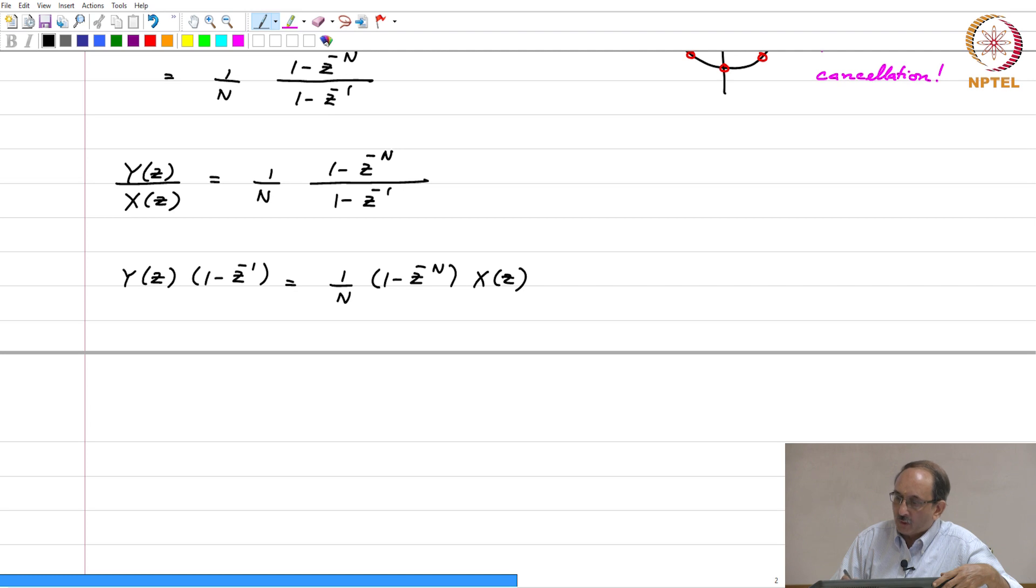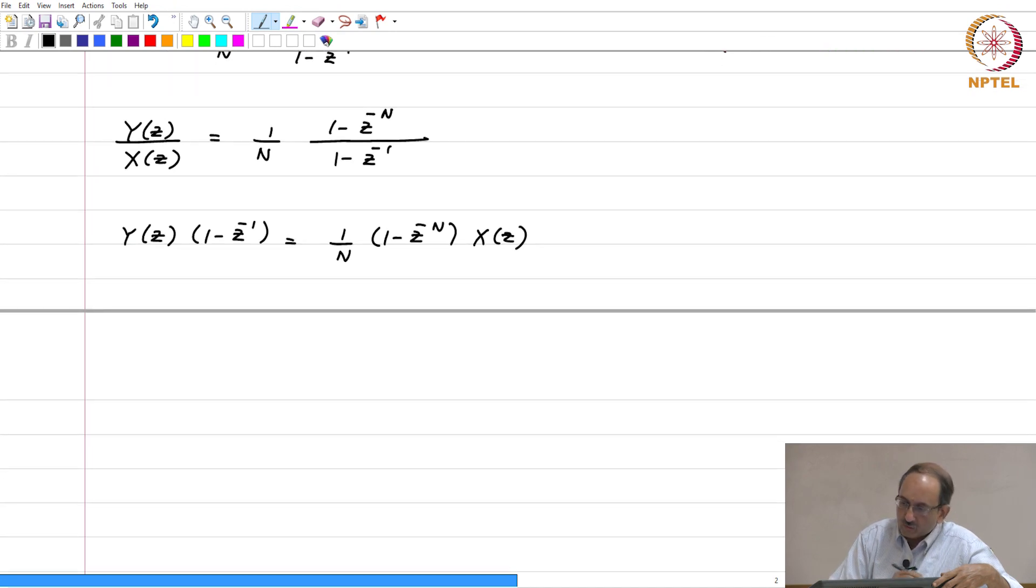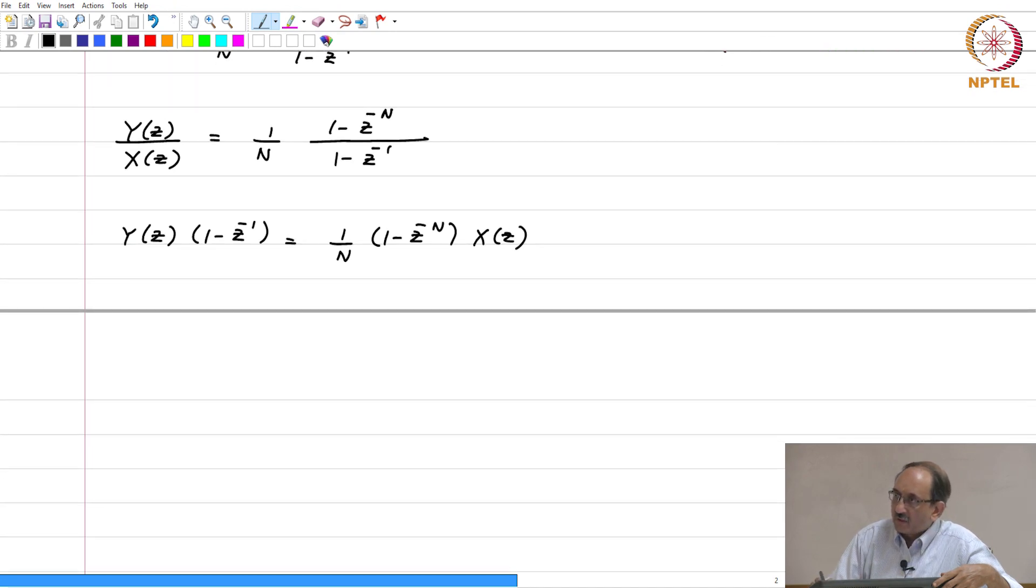I will make use of that property now and write this in the time domain, and very soon you will be able to see why this is indeed true. So, if you take the inverse z transform and write the above in the time domain, this can be written as y of n minus y of n minus 1,